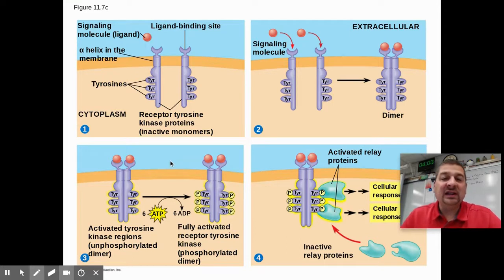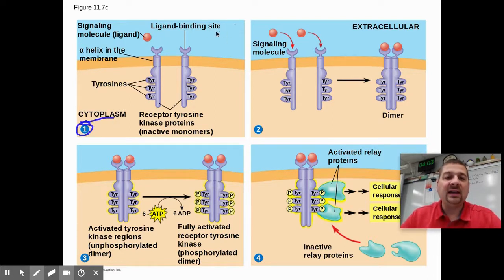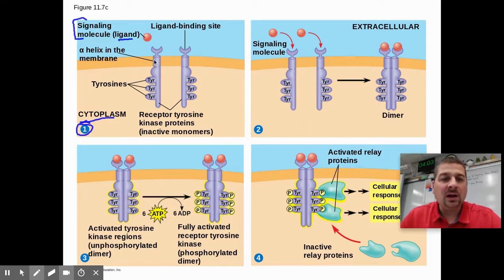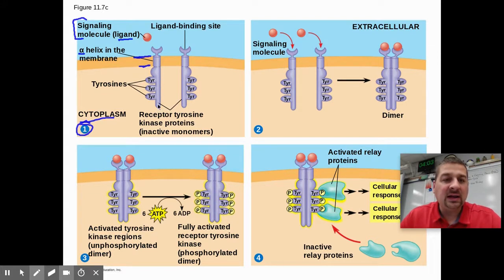When we look at the actual functioning of the RTK, we can see step one here. The cytoplasm is inside the cell and extracellular is outside. Here's our signaling molecule or ligand. The RTKs have kind of an alpha helix within the cell membrane, similar to GPCRs. They have protein receptors that hang down inside the cytoplasm with the amino acid tyrosines hanging off of them, and up here is the binding site for the ligand.